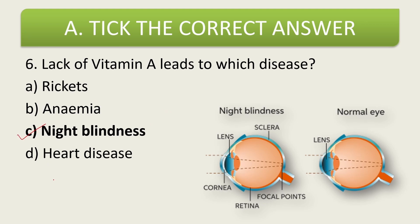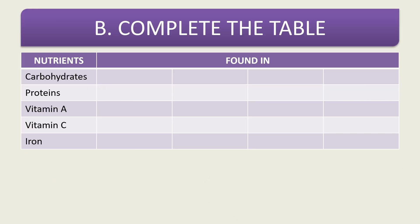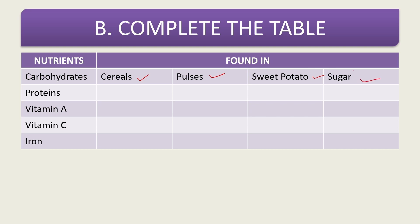Now section B — complete the table. On one side we have nutrients and on the other side we have food. We need to tell which nutrients are present in which food materials. First, carbohydrates are found in cereals, pulses, sweet potato, and sugar.